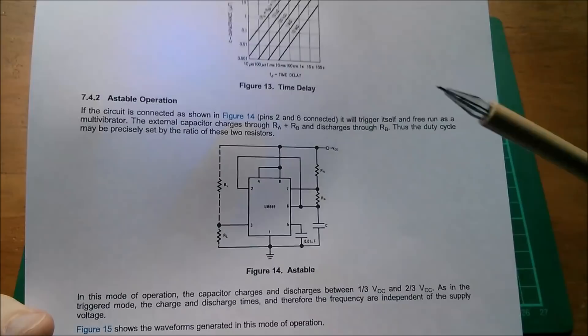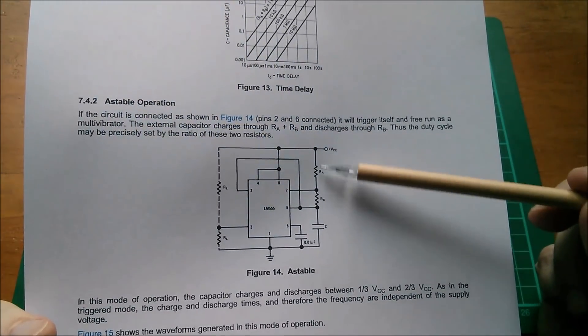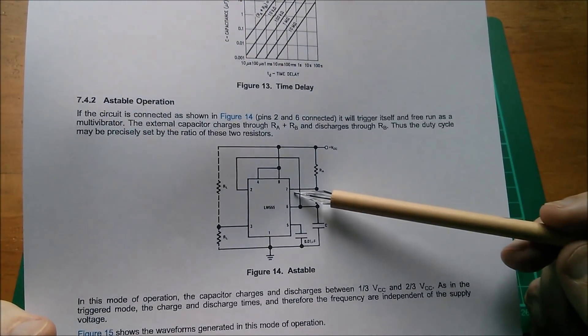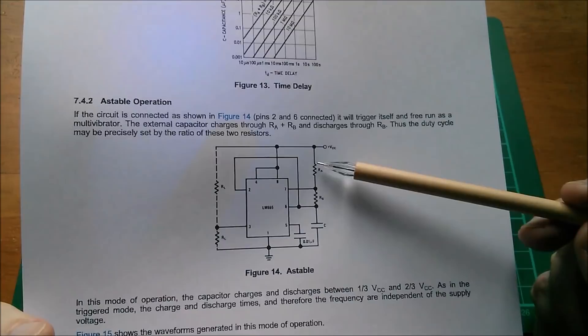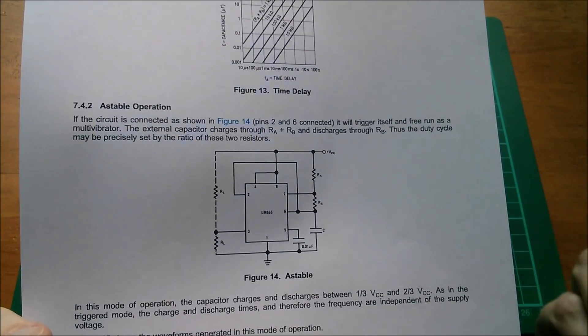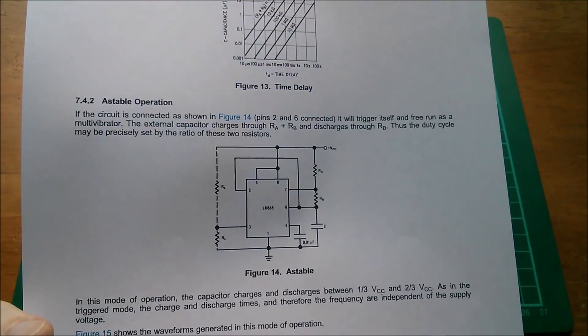Now you can mitigate that a little bit by keeping this top resistor to a low value. But of course you don't want to go too low, because when pin 7 pulls low this resistor is strapped across VCC and ground. So you want to keep that really no less than about 1k.